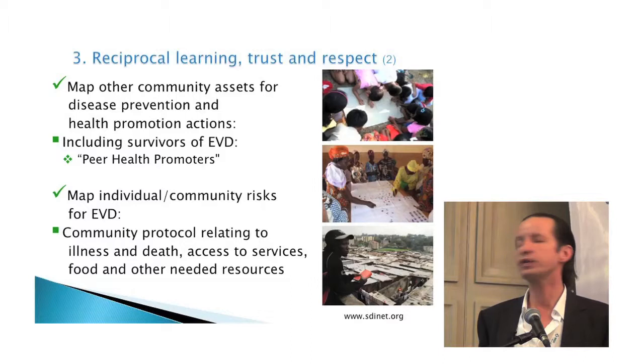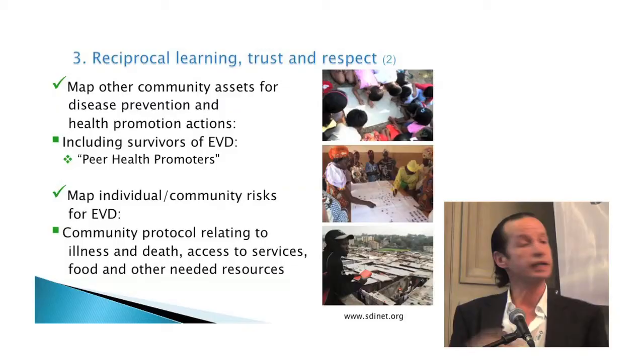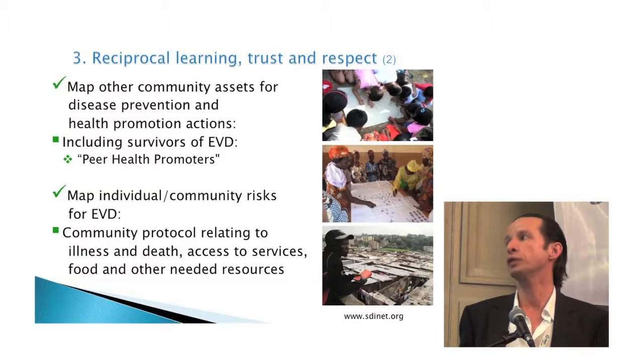Together, identify which of our practices may not be culturally sensitive, and work on those. Step four: sit down with the community and map the assets that can be used for health promotion and disease prevention. Increasingly, we feel this must include survivors of Ebola — we term them peer health promoters. Last night on television, they interviewed a nine-year-old boy — the only one left in his entire family after Ebola. He survived and is going around educating people: 'This is what you need to do, please take precautions.' Community knowledge is there, the people are there — we need to tap into that.